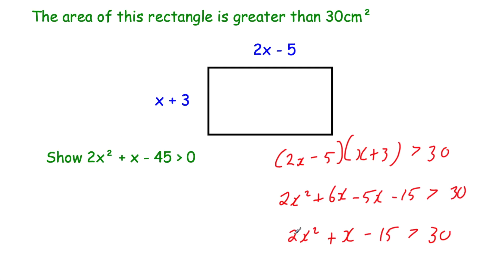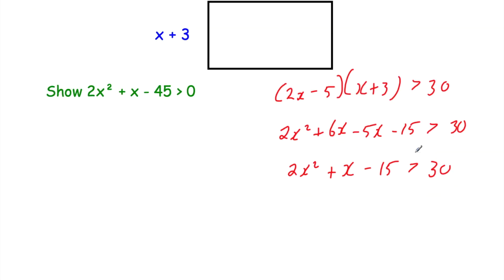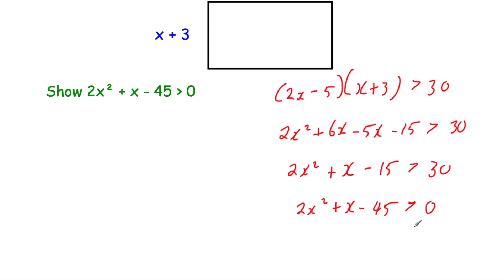Looking at what we're trying to get to, we've got the 2x squared and the plus x, but we need minus 45 and 0 on the right-hand side. So let's take 30 away from both sides. On the left we get 2x squared plus x minus 15 minus 30, which is minus 45, and that's greater than 30 minus 30, which is 0. So we've shown 2x squared plus x minus 45 is greater than 0.